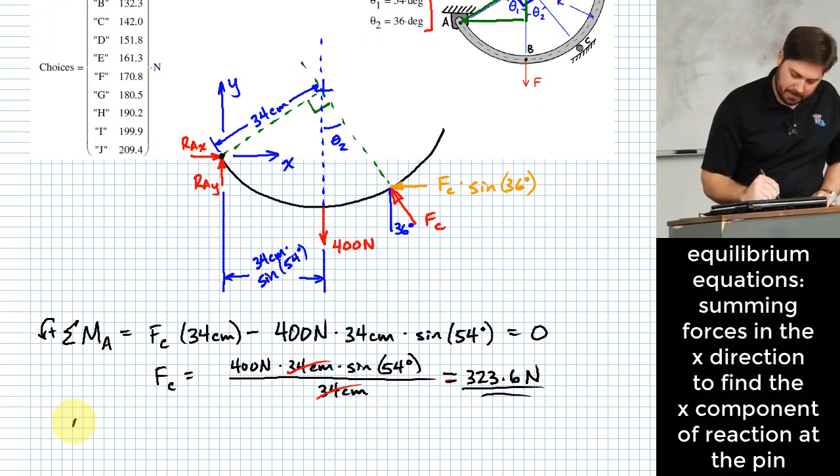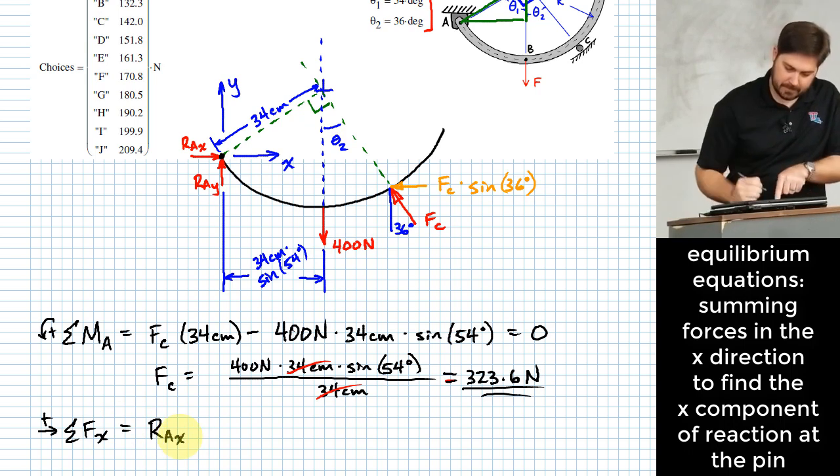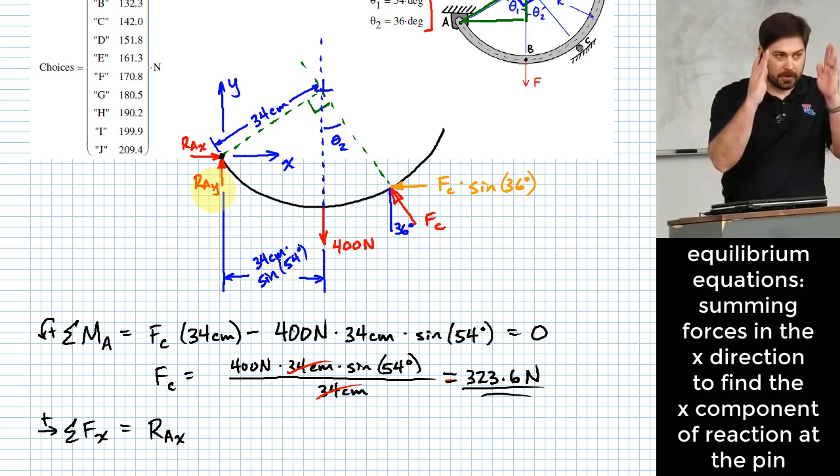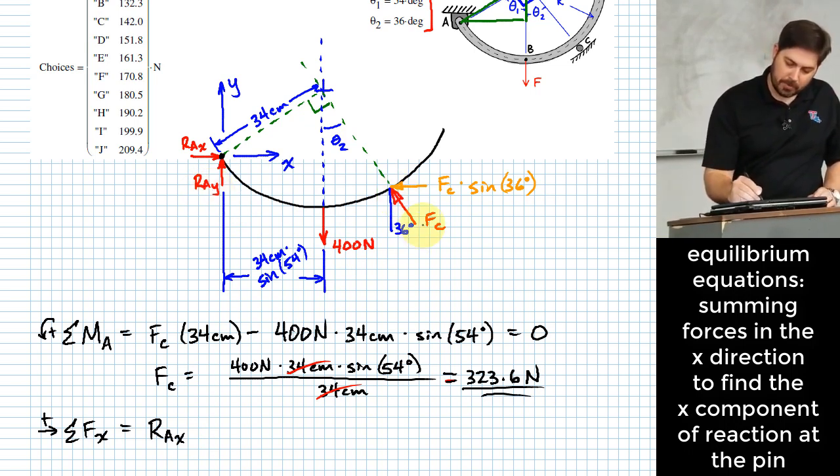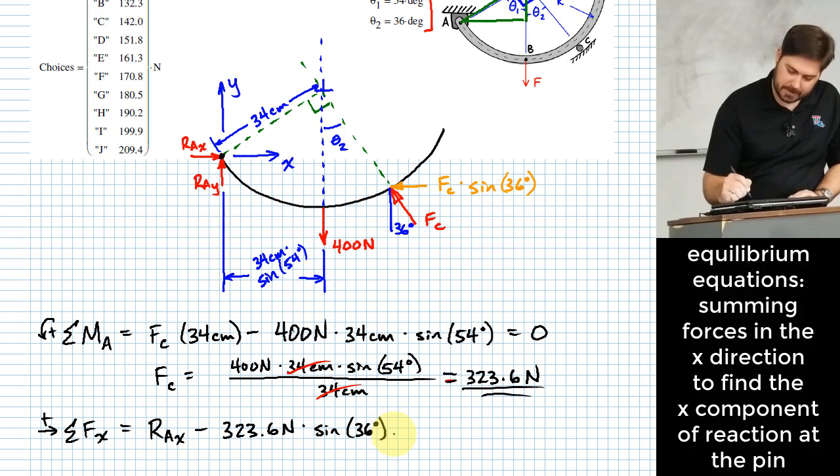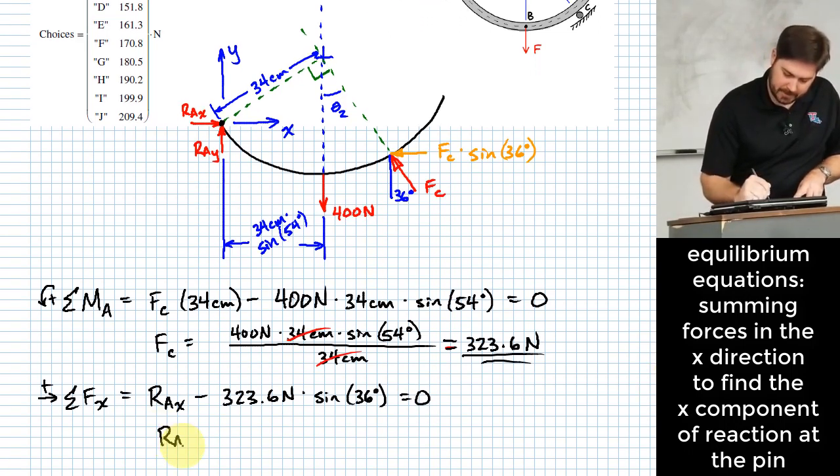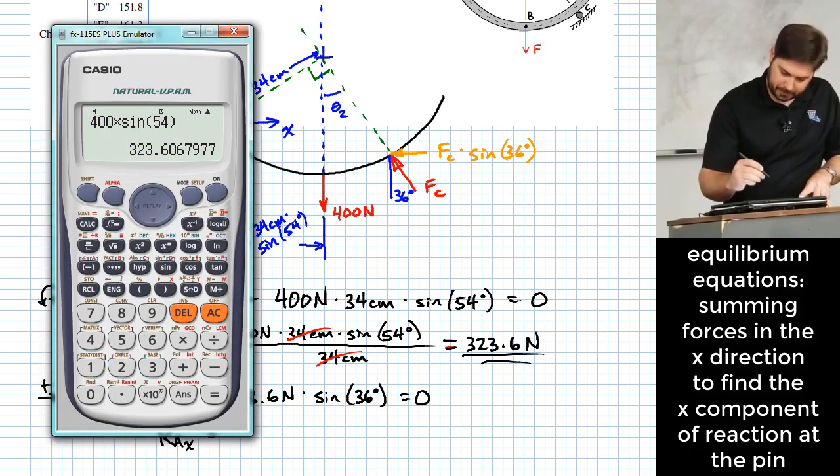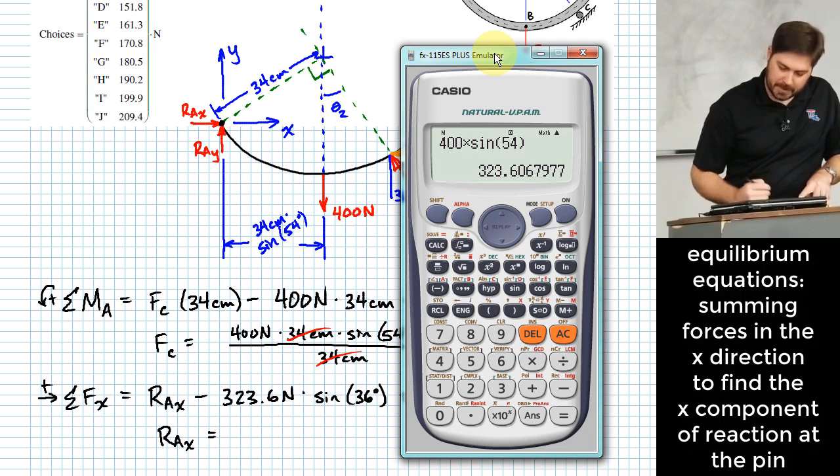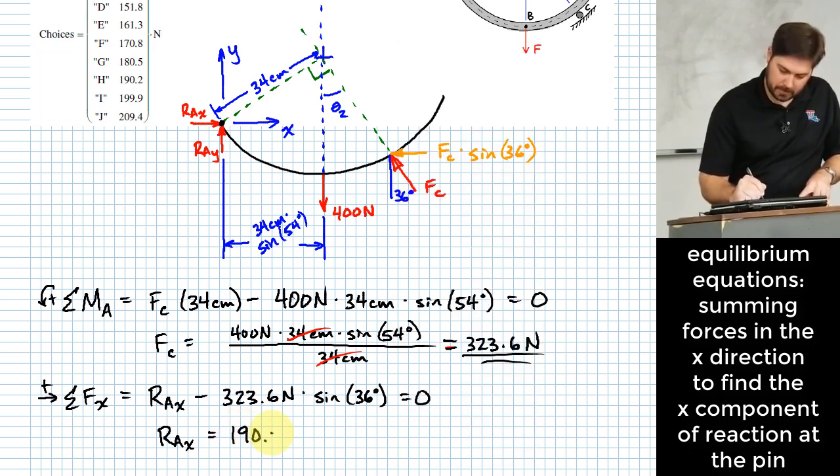Okay. But I also know what F sub C is now, so I can plug that in. That will be handy when we go to our sum of forces in the X direction. So here I've got R A X, right? 400 Newtons and R A Y are both entirely in the vertical direction. So I don't need to think about them, but I do need to think about my horizontal component of F sub C. It points in the leftward direction. So I'm going to say minus F sub C, which is 323.6 Newtons times the sine of 36 degrees. And that should be everything. So I can solve for R A X. Really, it's just going to be 323.6 Newtons times the sine of 36 degrees. 190.2 Newtons.